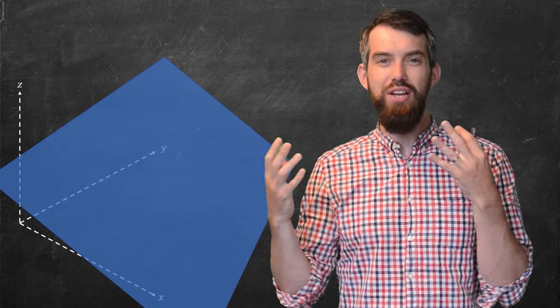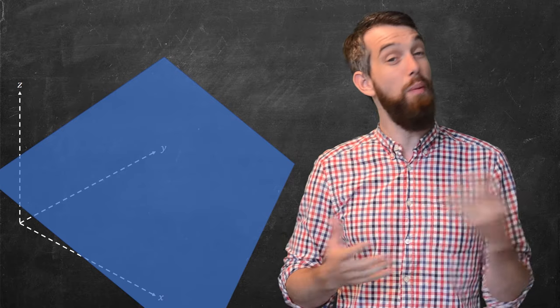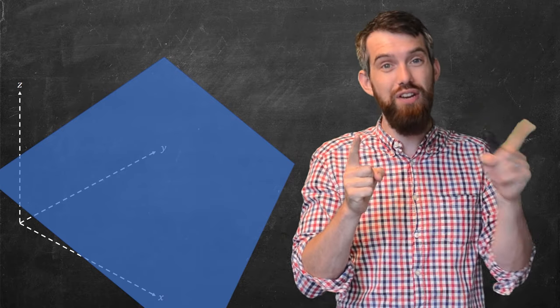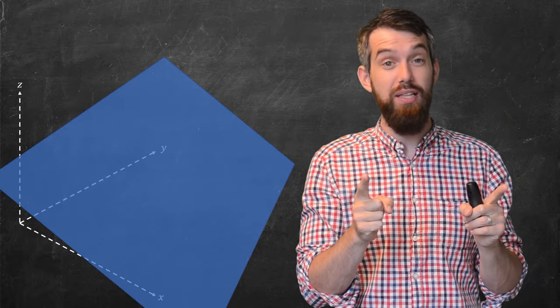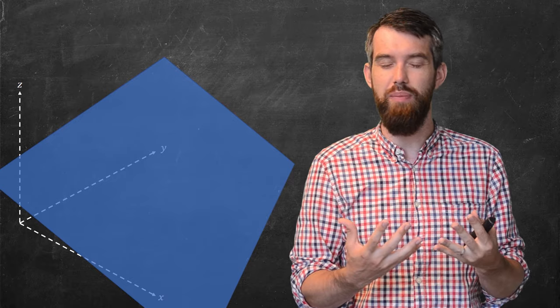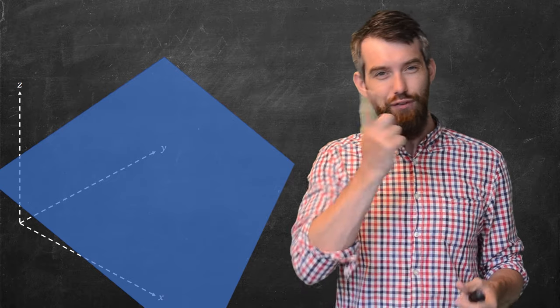Now, when we did equations of lines, I had to give you a couple pieces of information. I had to give you a point on the line and I had to give you a direction vector along the line. And the same basic idea is going to be true for planes as well, and I had to give you two pieces of information, but they're a little bit different.